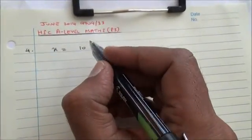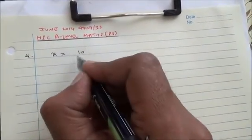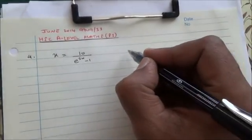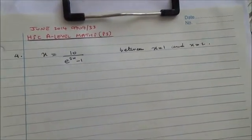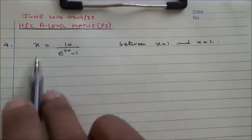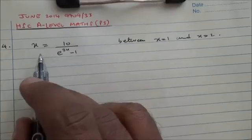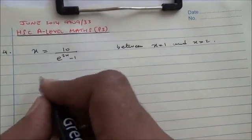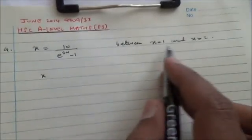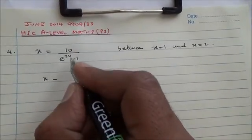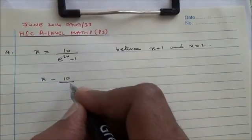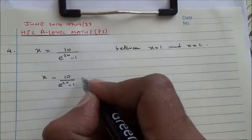We are told that x equals 10 over e to the power of 2x minus 1, and we have to show that there is a root between x equals 1 and x equals 2. The best way to do this is to rearrange the formula. We rearrange it to make it more suitable to determine whether we have a root between x equals 1 and x equals 2, giving us x minus 10 over e to the power of 2x minus 1 equals 0.